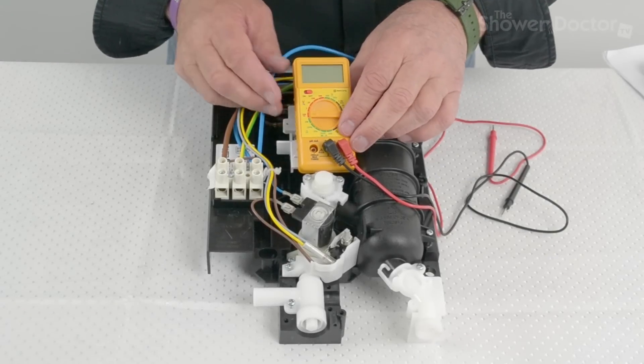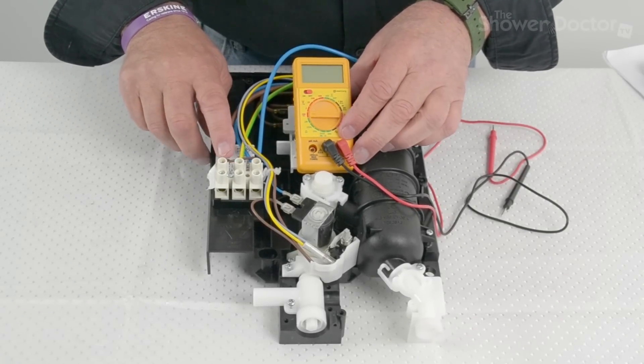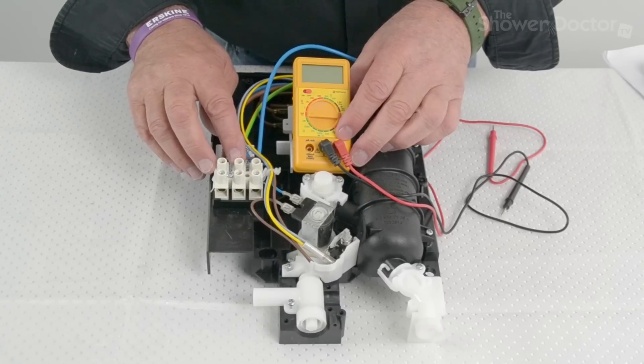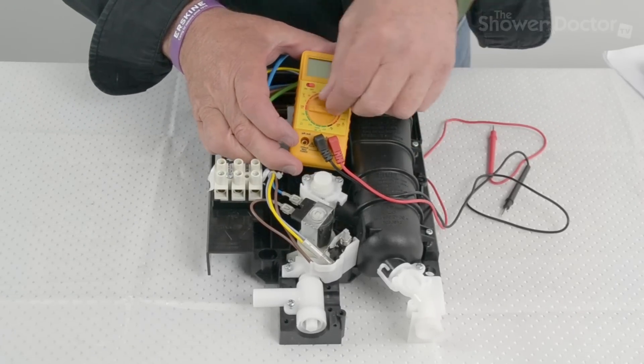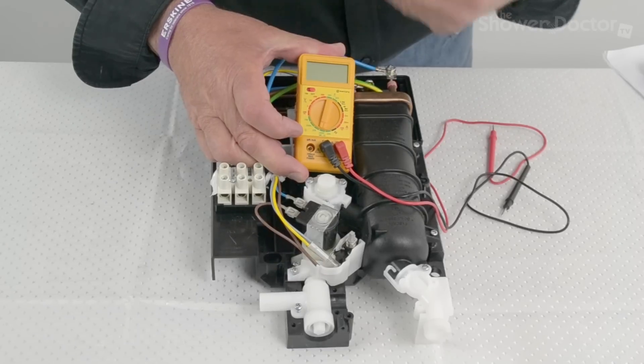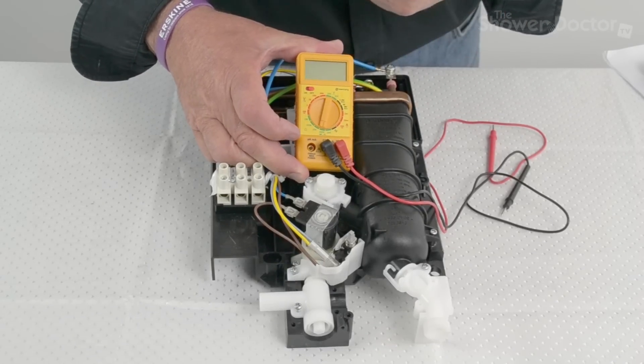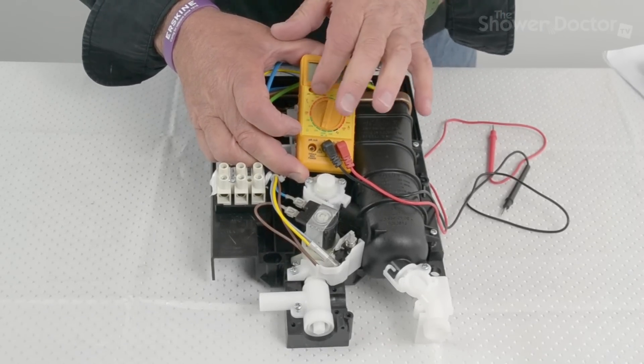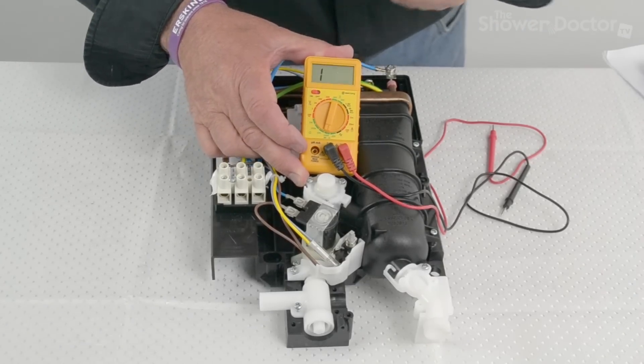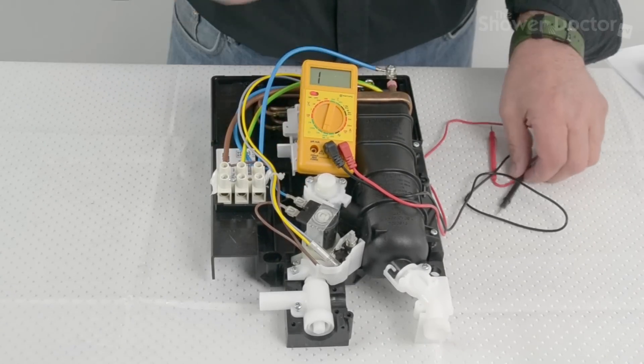Now we're going to do some continuity checks. We know that there's power getting into the unit we've switched off again to make sure it's safe and we're going to check continuity. So with our meter we need to set it down here to the continuity. Now if it has continuity the meter will bleep and when it bleeps we know that the continuity is there. The bleep is quite quiet so you may have to listen carefully to hear it but here we go.